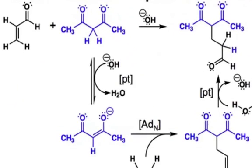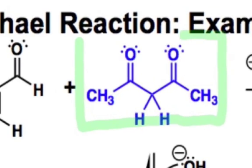Let's take a more detailed look at the mechanism of the Michael reaction on this slide. The first thing you should notice is that the nucleophile that's used is often a 1,3-dicarbonyl compound. This is often required because the enolate that forms needs to be stabilized by two carbonyl groups, and not just one, in order to avoid direct addition to the carbonyl group.